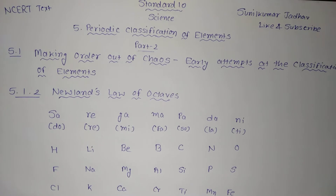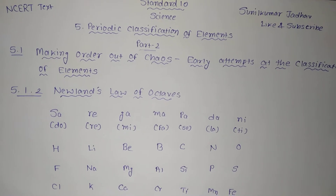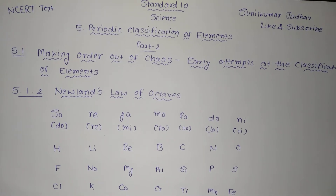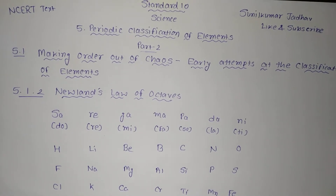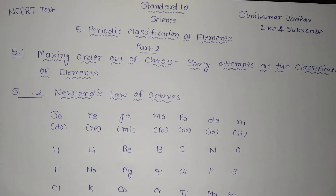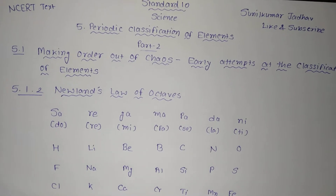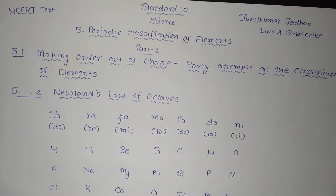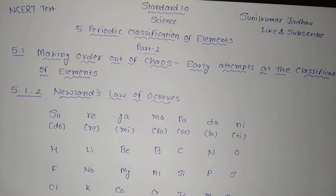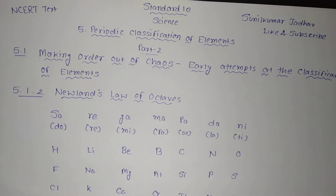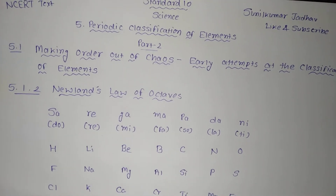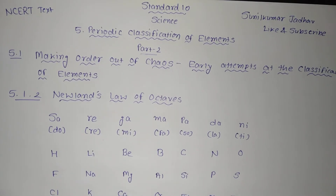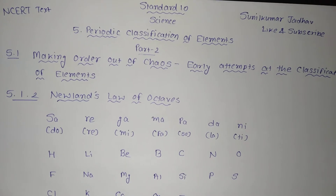The attempt of Dobereiner encouraged other chemists to correlate the properties of elements with their atomic masses. At that time, only atomic masses were known, so on the basis of that only, they were trying to classify the elements. In 1866, John Newlands, an English scientist, arranged the known elements in order of increasing atomic masses. He started with the element having the lowest atomic mass and ended at thorium, which was the 56th element known during his time.